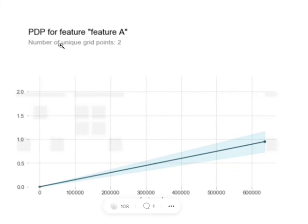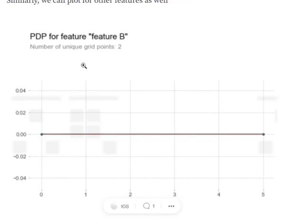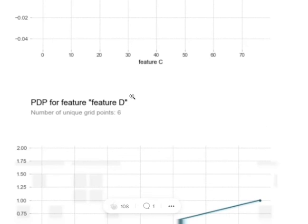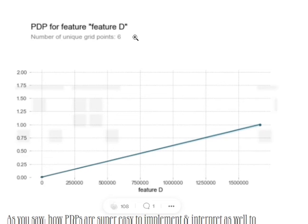You can see the PDP for feature A—as the value for A increases, the prediction moves from 0 to 1, showing that as the value of A increases, the prediction moves from 0 to 1. For PDP B, you can see that B is not playing a major role in the prediction, so whatever the value of B may be, it's not impacting predictions significantly. Similarly for C. But if you look at the PDP for feature D, again you can see that as the value is increasing, the prediction moves from 0 to 1.